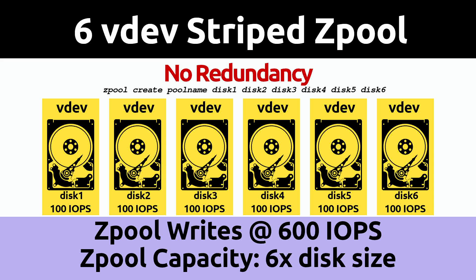So you have six drives — how would you configure them for the best speed and acceptable fault tolerance combination? Here are some examples. Fastest: you could make them into a six VDEV striped Z pool, also called RAID 0 in other systems, with the capacity of all drives combined. The Z pool reads and writes at the combined IOPs of all six drives. However, a striped Z pool is usually a really bad idea, as the loss of one drive will cause you to lose all of your data on all of those drives.